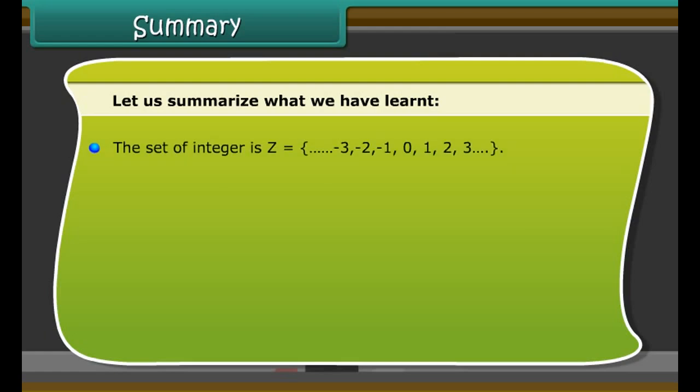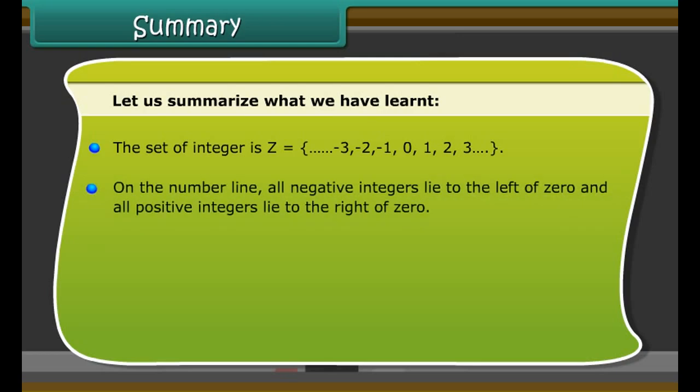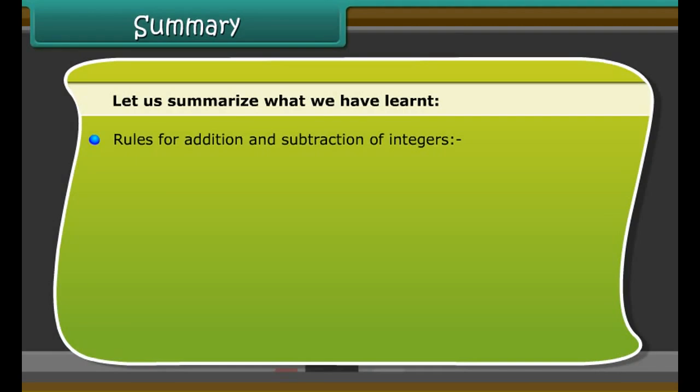For better understanding we can solve one example. We arrange the numbers so that the positive integers and the negative integers are grouped together. Now let us find the value of minus 10 minus minus 5 using a number line. This is the same as minus 10 plus 5, as the additive inverse of minus 5 is 5. First we move 5 steps to the right on the number line starting from minus 10. We reach minus 5.